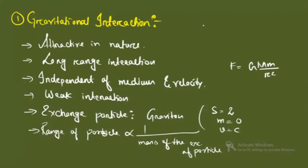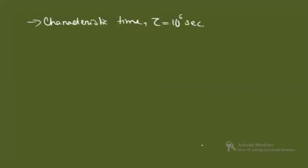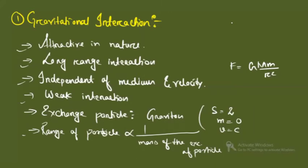To summarize gravitational interaction: it is attractive in nature, a long-range interaction, independent of medium and velocity, and a weak interaction. The exchange particle is the graviton with spin 2, mass 0, and velocity equal to the speed of light. The range is proportional to 1/mass of the exchange particle, and the characteristic time τ = 10^16 seconds. Next, we will discuss electromagnetic interaction.